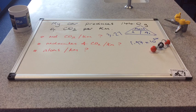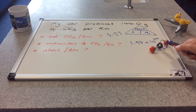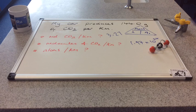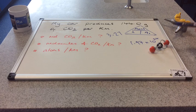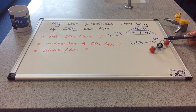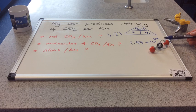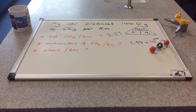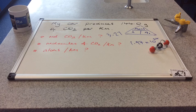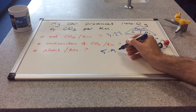How many atoms are we talking about? Well in one molecule there are one, two, three atoms. So if that's how many molecules we've made, we multiply that by three to get the number of atoms. And that comes out at 5.91 times 10 to the 24.